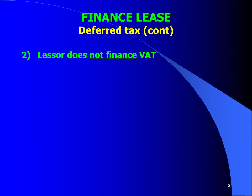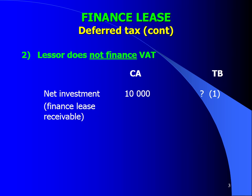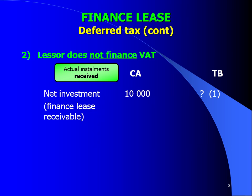If we look at a situation where the lessor does not finance VATs, once again you will start with a net investment finance lease receivable calculated by taking the gross investment less the unearned finance income. You have to ask yourself what will be taxable in future. In this instance, the installment does not include VATs because the lessor does not finance VATs, so the entire installment received will be taxable.